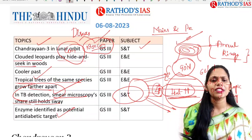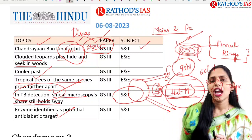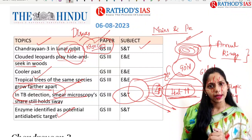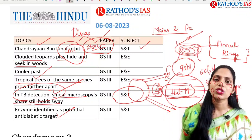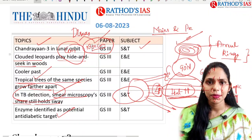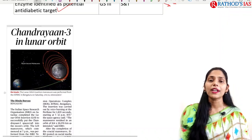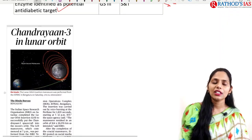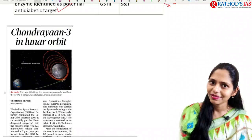Now let us see the analysis very quickly. Today is Sunday, so there is no editorial — we just have to see important articles from a UPSC prelims and mains point of view. The first topic is Chandrayaan-3, which we have already discussed a number of times.